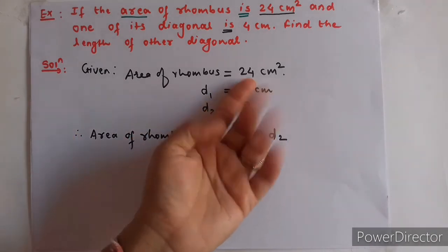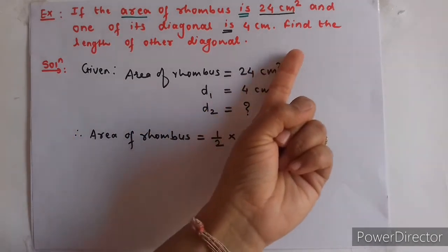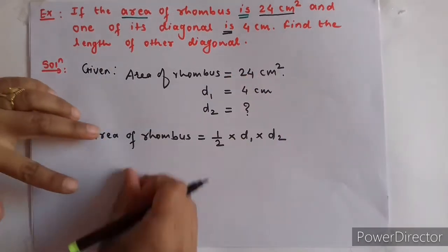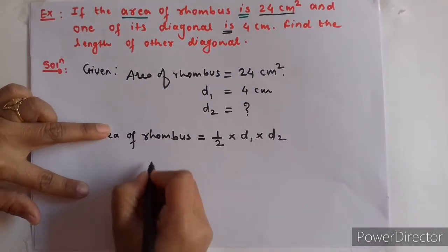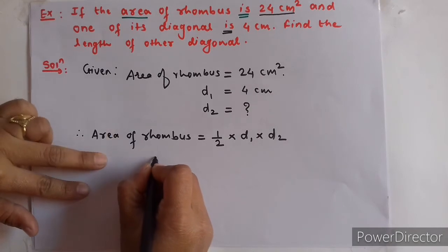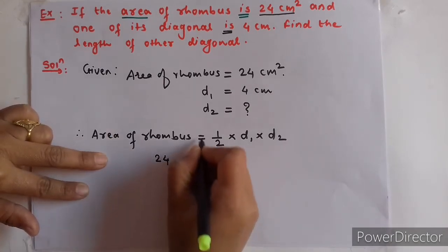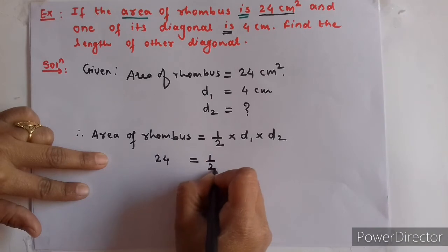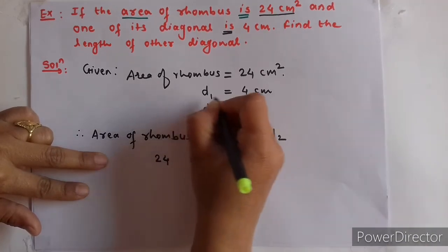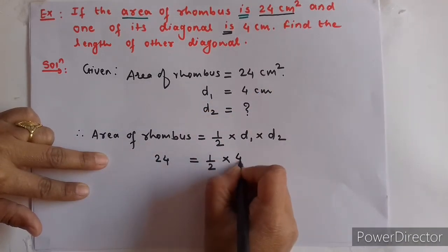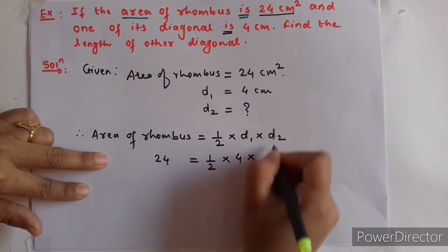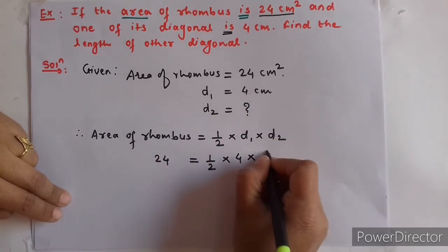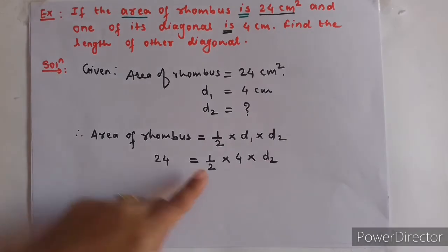So we write: 24 = half into D1 into D2. Here we will not write the unit on the left side, just the number 24. D1 is 4 cm, so: 24 = (1/2) into 4 into D2. D2 is unknown, so it remains as D2.